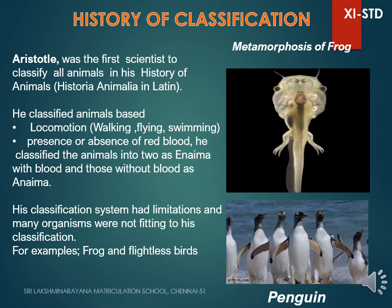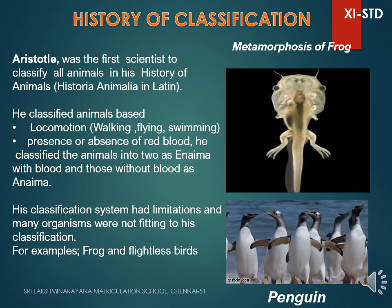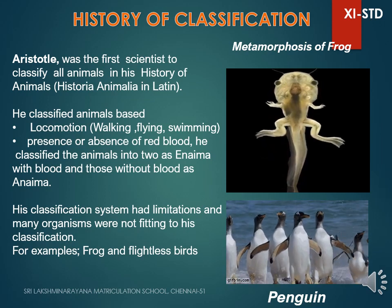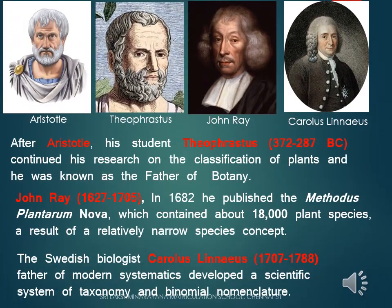In spite of these limitations, Aristotle's classification system was followed for more than 2000 years, up to 1700. After Aristotle, his student Theophrastus continued research on the classification of plants, and he was known as the father of botany. In 1682, John Ray published the Methodus Plantarum Nova, which contained about 18,000 plant species.